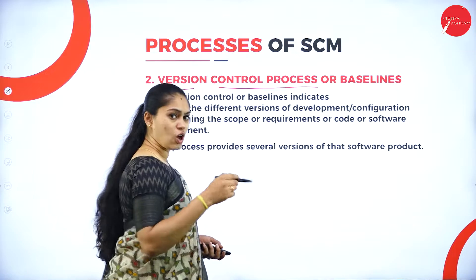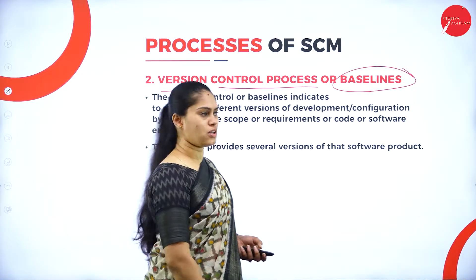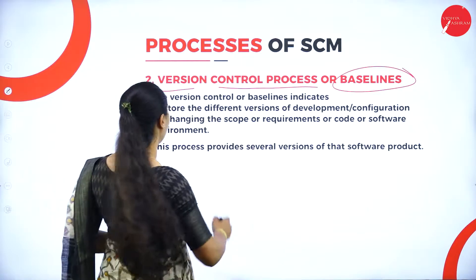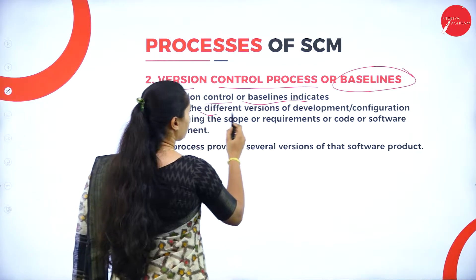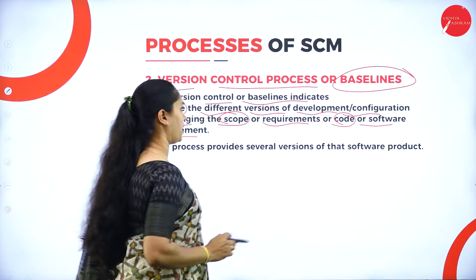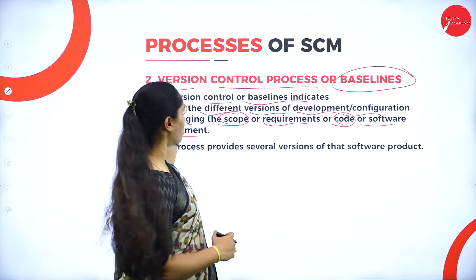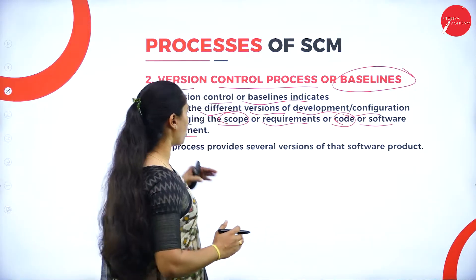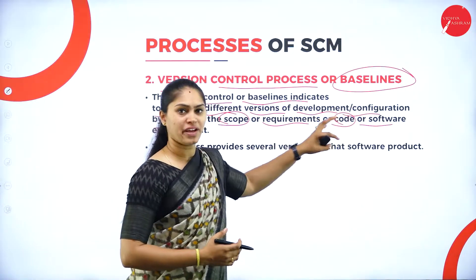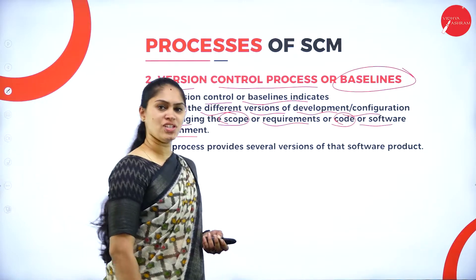The second stage is version control process or baseline — very, very important word. Whenever you are writing an answer for a given question, you have to mention the key points, so concentrate on the word baseline here. Version control or baseline indicates storing the different versions of the development or configuration by changing the scope, requirements, code, or software environment. We have to do the trial and error process in this version control — checking the efficiency of software in all versions and all scopes. This process provides several versions of the software product; amongst that, we have to choose which is the best one to satisfy the requirement of a customer.